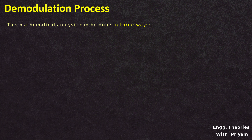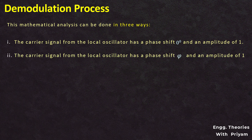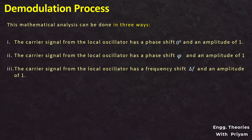In the last lecture, we saw the detection of the SSB-SC modulated signal by using a synchronous or coherent detector. There are three cases. In the first case, the carrier signal from the local oscillator has a phase shift of 0 degrees and amplitude of 1. In the second case, it has a phase shift of 5 and amplitude of 1. In the third case, it has a frequency shift of ΔF and amplitude of 1. We have already discussed the first case, where the carrier signal was the same as used in generation of the SSB-SC signal — meaning neither phase error from phase shift φ nor frequency error from frequency shift ΔF was present.